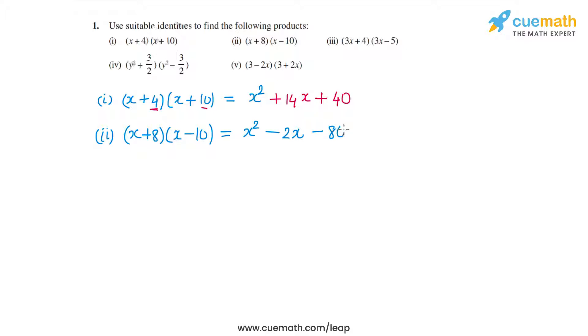Just so that you're clear, I'm using the identity (x + a)(x + b) = x² + (a + b)x + ab. This is what I'm using for the first two parts.